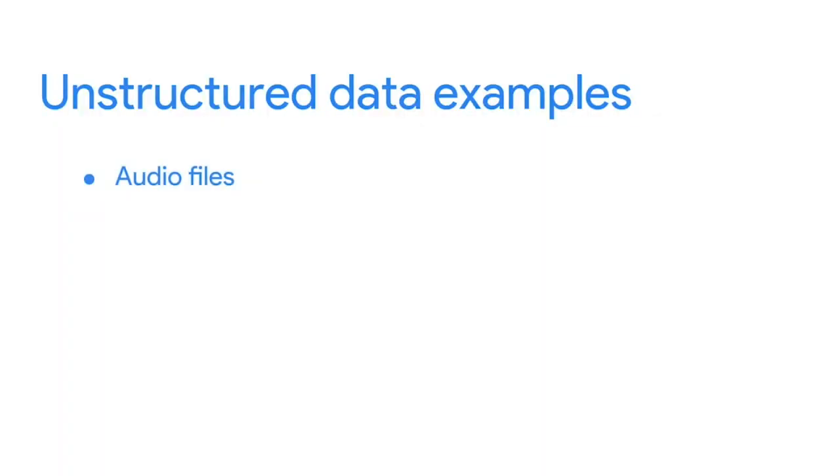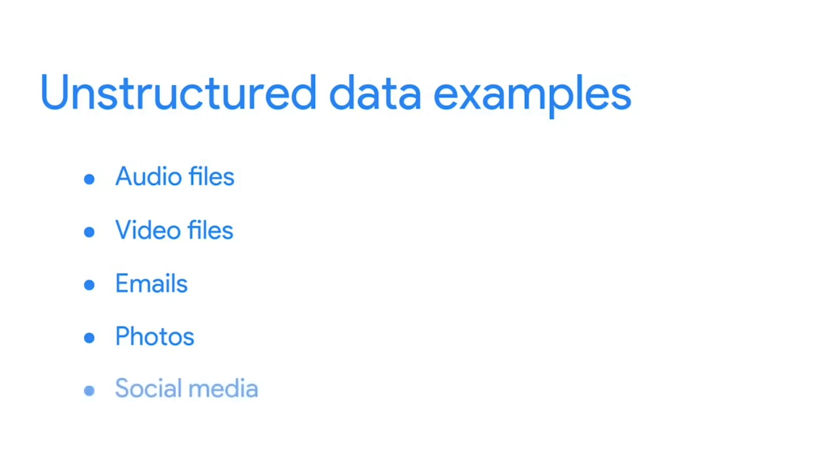Most of the data being generated right now is actually unstructured. Audio files, video files, emails, photos, and social media are all examples of unstructured data. These can be harder to analyze in their unstructured format. But you'll be working with structured data most of the time. If you need to analyze data about unstructured data in emails, photos, and social media sites, it'll most likely be structured for analysis before you even get to it. As a quick refresher, structured data is data organized in a format like rows and columns. Structured data works nicely within a data model, which is a model used for organizing data elements and how they relate to one another.